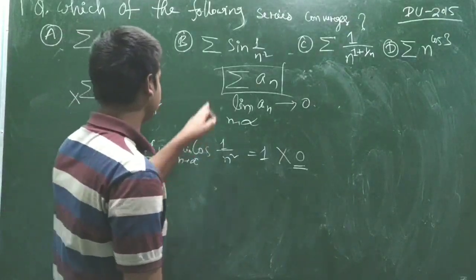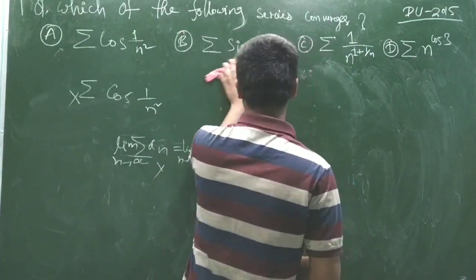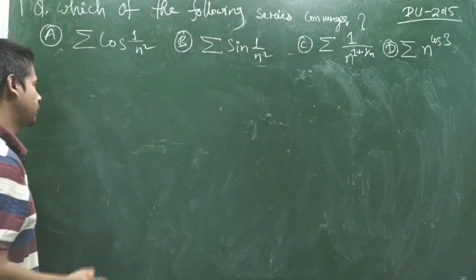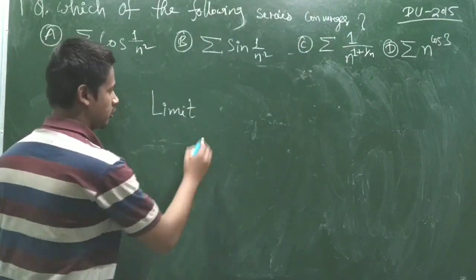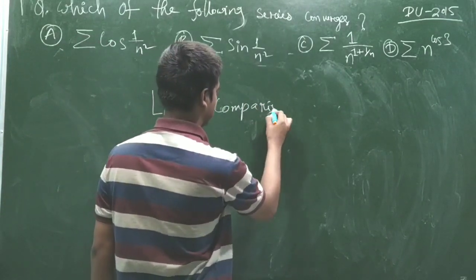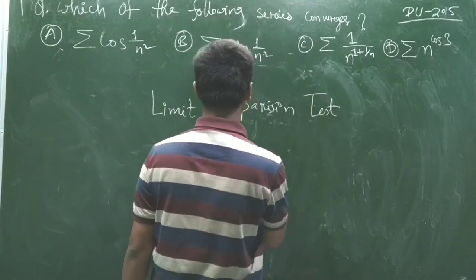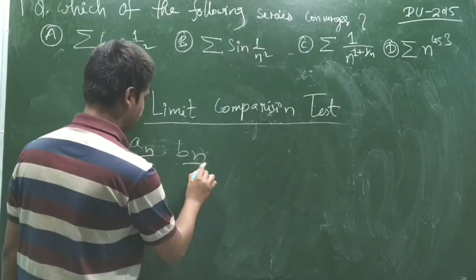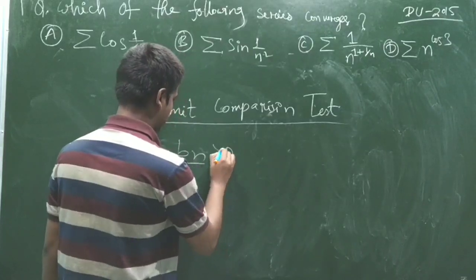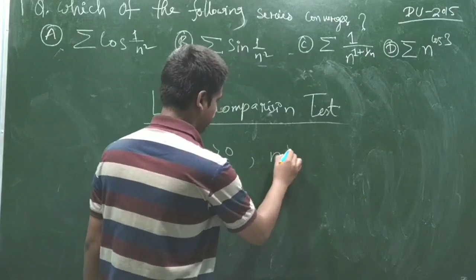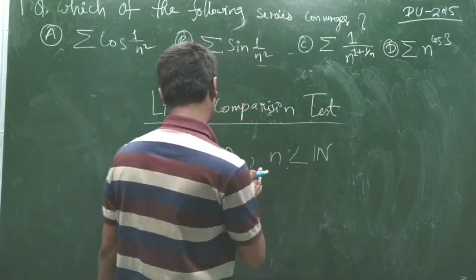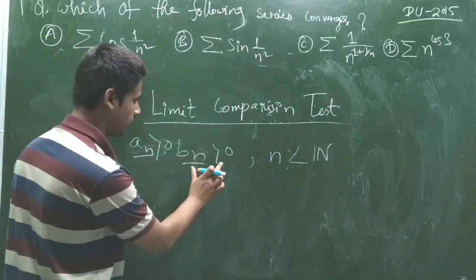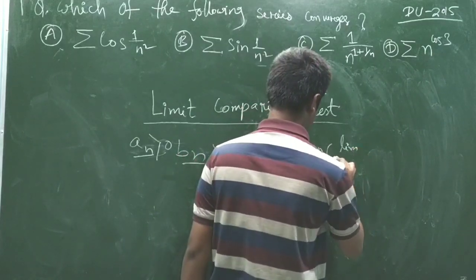Similarly, for the series sin(1/n²), we use the limit comparison test. The limit comparison test states: if aₙ and bₙ are two sequences of positive terms, and both sequences are positive, and the limit as n tends to infinity...